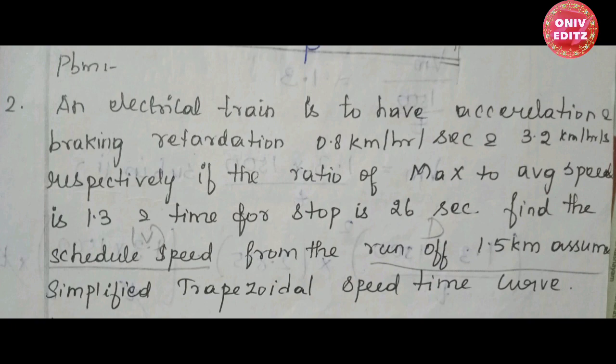If you look at the speed-time curve, you will see 4 problems. I have found this problem in part C, so there are number changes — you can attend it in part C. If you look at the important problems in this unit, you will see 4 problems.